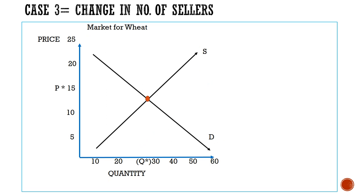Due to the current outbreak of the coronavirus pandemic, this has affected people's lives and many people have died. Dying people, in simpler words, mean that you have fewer sellers. This will affect the market for wheat — fewer sellers mean the supply curve will shift towards the left. At the new equilibrium, you notice a higher price and a fall in quantity.